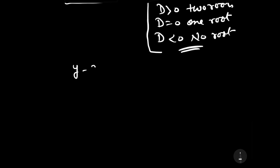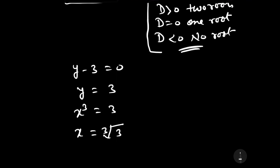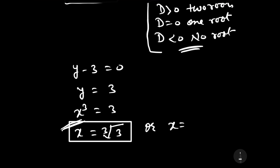That is y minus 3 equals 0, so y equals 3. Since we assumed y equals x to the power 3, we have x cubed equal to 3. Taking the cube root of both sides, x equals the cube root of 3, which can also be written as x equals 3 to the power 1 by 3. This is our solution.